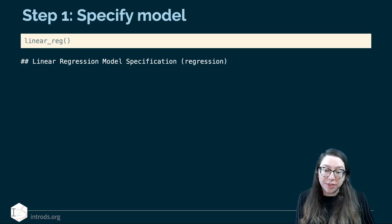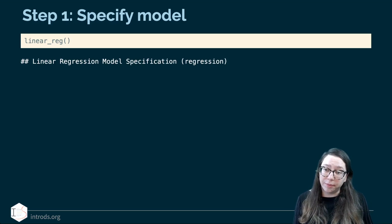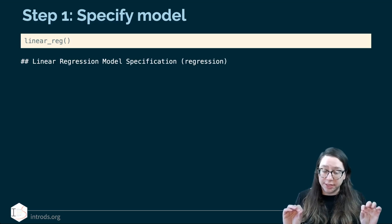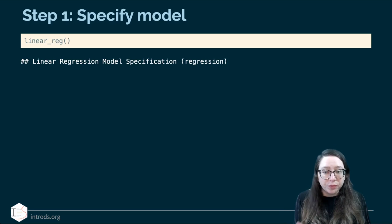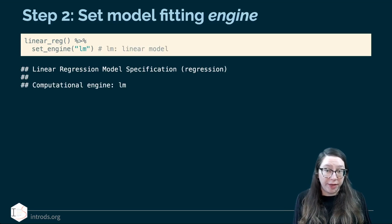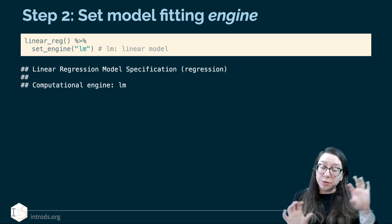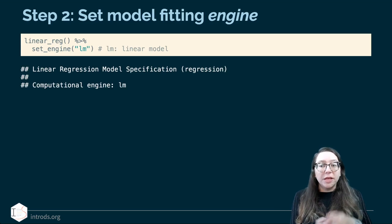So how do we use tidy models to actually fit a model? Step one is to specify the model — we're building a linear regression model, so the function we start with is linear_reg. Step two is to define the model fitting engine. For now, we're going to be using LM — those letters should feel familiar from when we fit smooth lines on our ggplots with geom_smooth, which stands for a linear model.